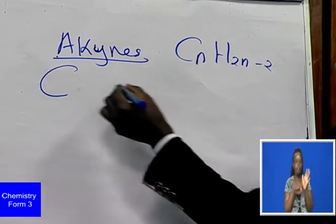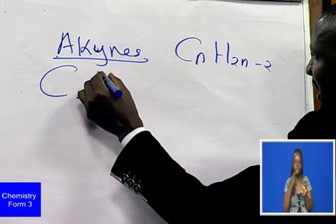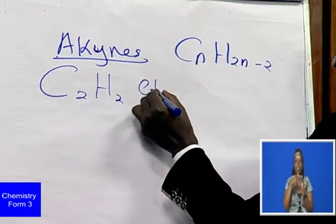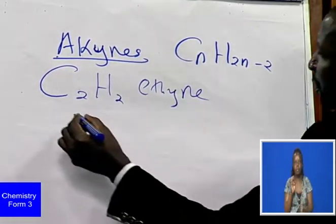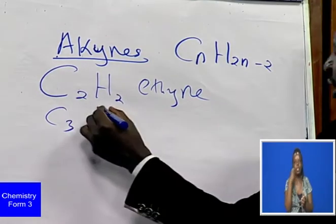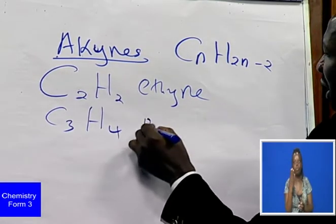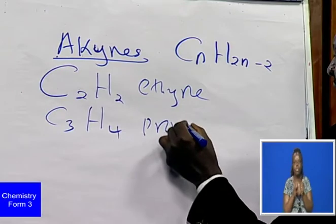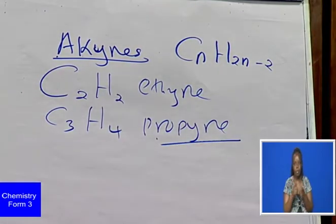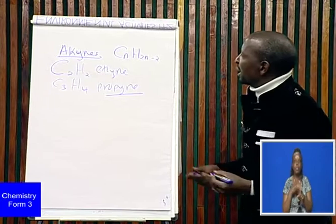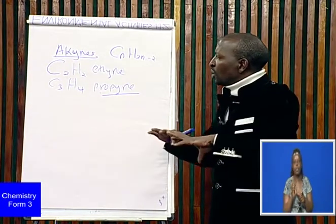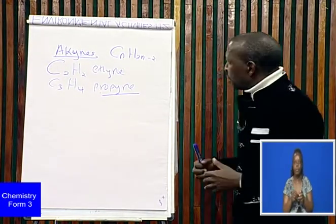The first member of the homologous series is ethyne. We can also have C3H4 which is propyne, and we also have butyne. According to the confines of our syllabus, we are supposed to know how to prepare ethyne in the laboratory.